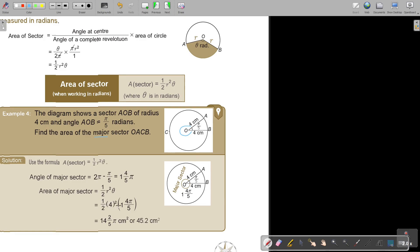So it's a half times 4 squared, and there is my angle. And I just calculate it. I can either leave it in terms of π or I can work it out. Very easy.